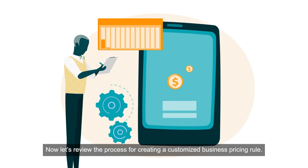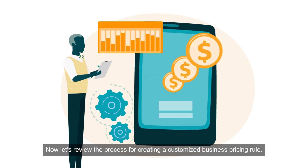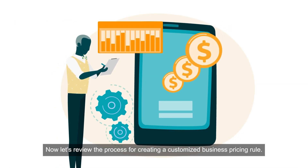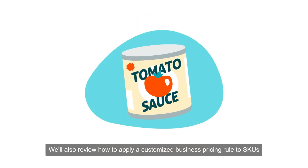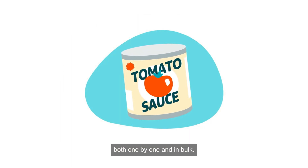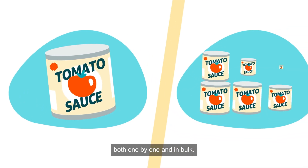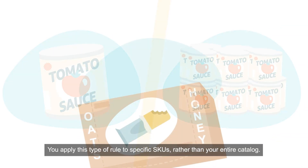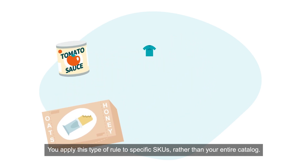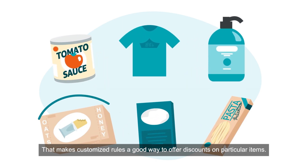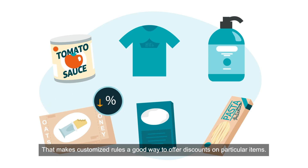Now let's review the process for creating a customized business pricing rule, as well as how to apply a customized business pricing rule to SKUs both one-by-one and in bulk. You apply this type of rule to specific SKUs rather than your entire catalog, which makes customized rules a good way to offer discounts on particular items.